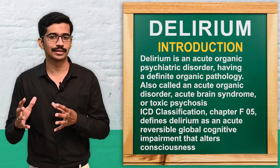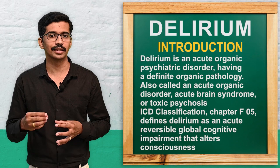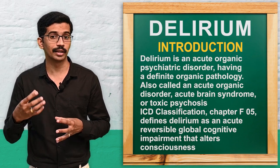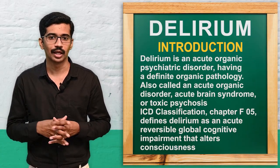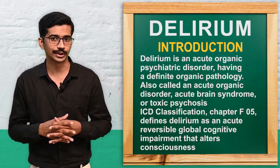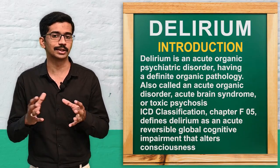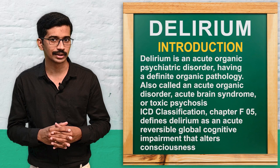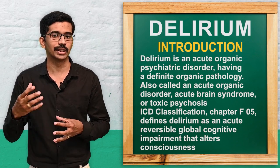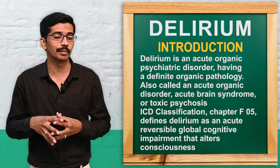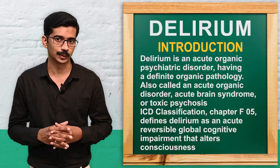The definition of delirium: it is a reversible impairment in global cognitive function which alters the consciousness of the patient. It is reversible, meaning the patient may come back to a normal state. There is a disturbance with cognitive function — the patient's cognitive functions of the brain may be altered, and it can affect the consciousness of the patient as well.